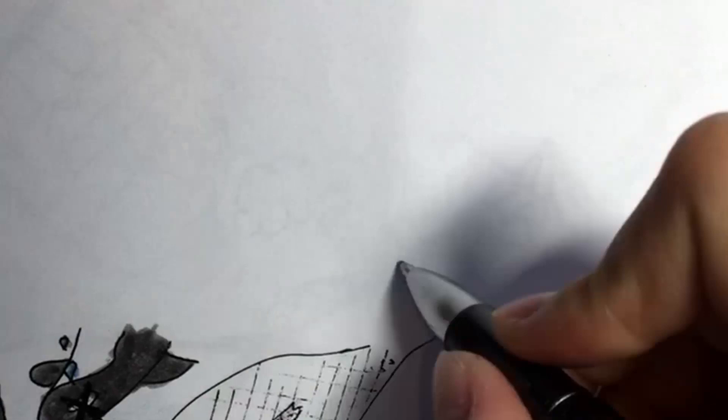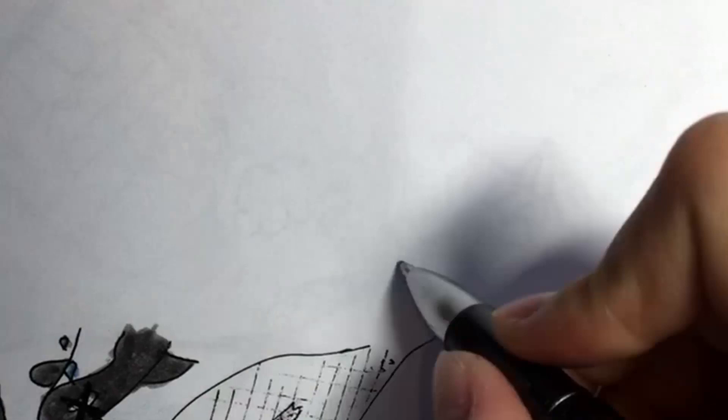Secondly, noises from ships interfere with echolocation, so they can't communicate with the family, putting them in danger.